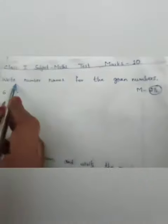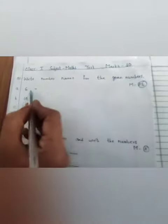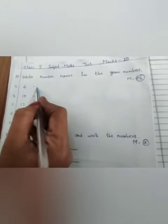Question number 1. Write number names for the given numbers. Children, part A, 6. You have to write spelling. Number name, S-I-X, 6.